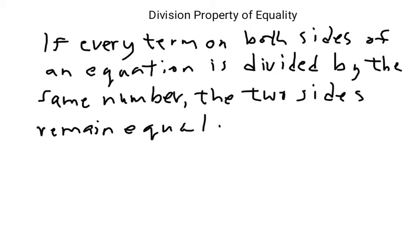I rewrote the division property of equality in slightly different words than what you would read in your book. Your book says if both sides of an equation are divided by the same number, the two sides remain equal. And I change it to say that if every term on both sides of an equation is divided by the same number, the two sides remain equal. It's a slight difference. But with division and multiplication, unlike addition and subtraction, you have to divide or multiply every term on both sides for the sides to remain equal. Now a lot of times you only have one term on the left side and one term on the right side. And that's going to be the case in this lesson.